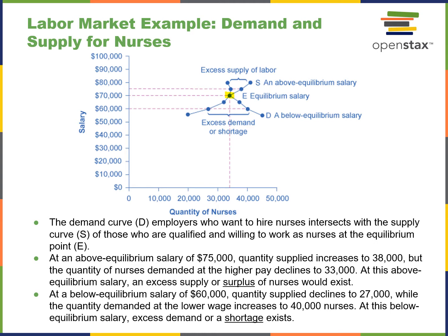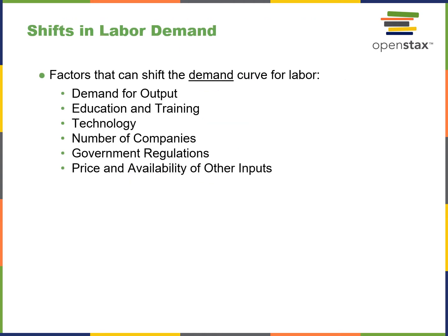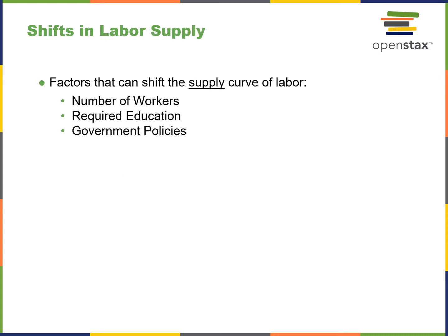Just like for goods, everything but price shifts demand for goods and labor. The factors that shift labor demand include: demand for output, education and training, technology, number of companies, government regulations, and the price and availability of other inputs. These are what we call endogenous or external factors that would create the shift. With respect to labor supply, the number of workers available, required education, and government policies are the things that will shift the supply curve.